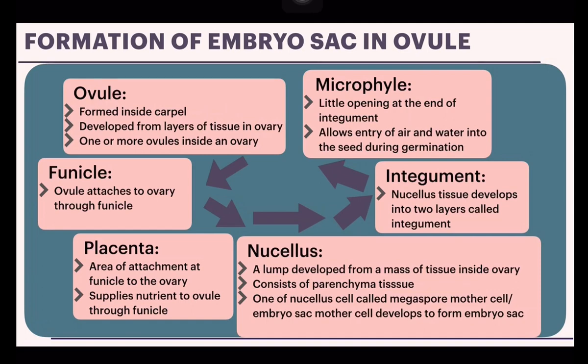The integument is formed when the nucellus tissue develops into two layers called integuments. And last, the micropyle is the little opening at the end of the integument, which allows entry of air and water into the seed during germination.